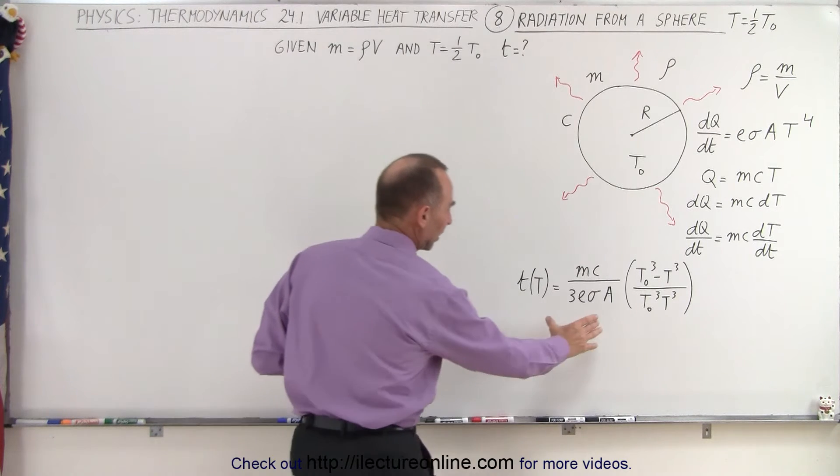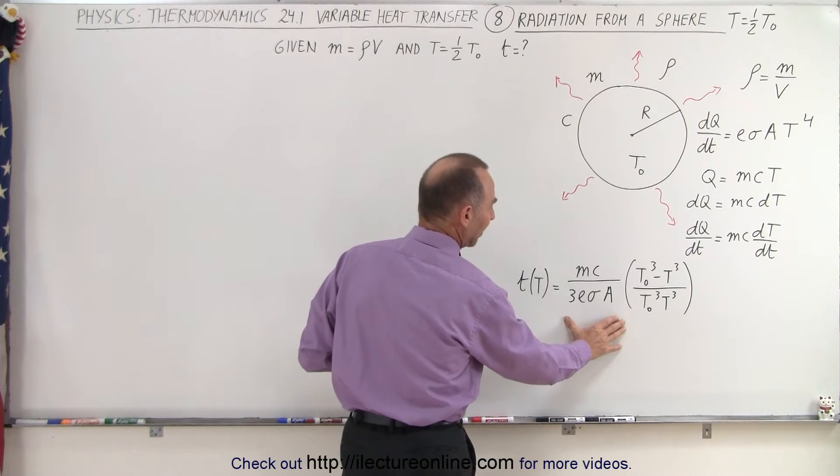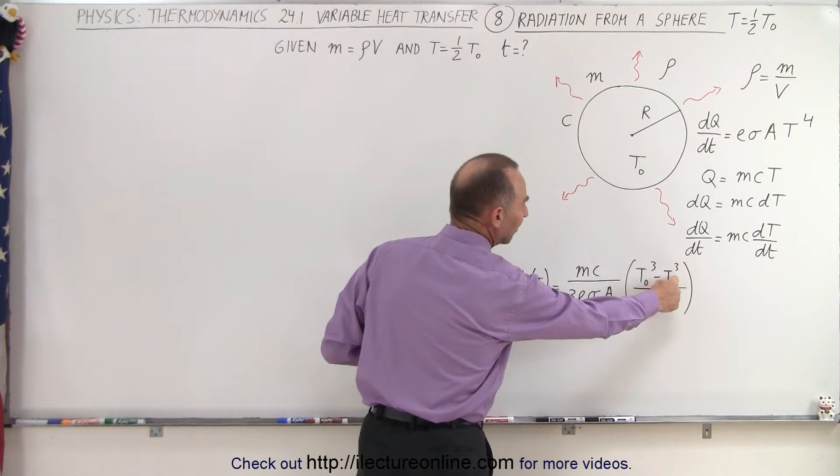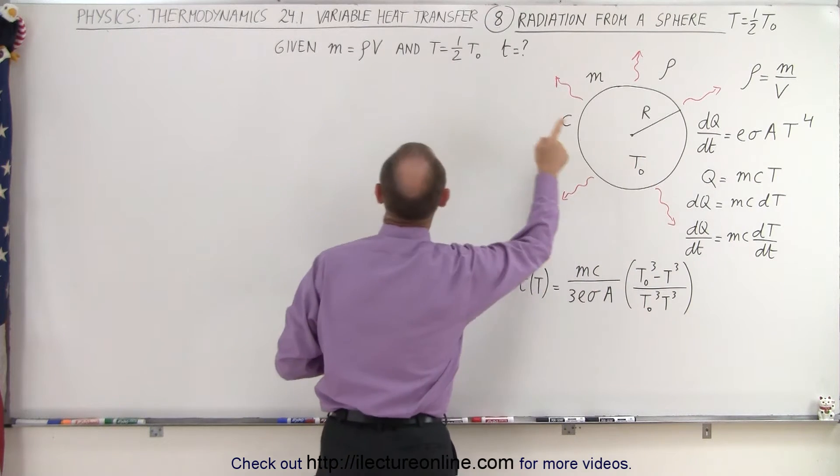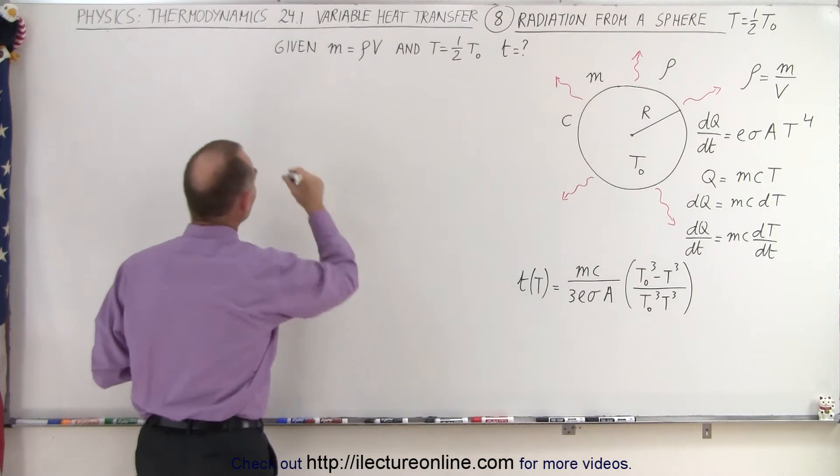So what we're going to do here is take the equation that we derived last time, replace every T by T sub-naught divided by 2, and for M we're going to replace it by density times volume. So let's do that.